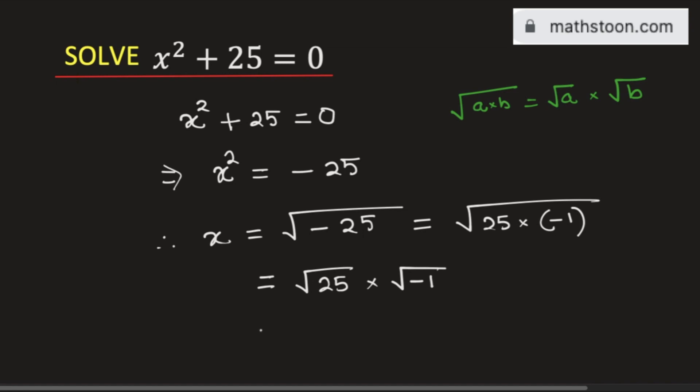And we know that square root of 25 is 5 and square root of minus 1 is the imaginary complex number i.